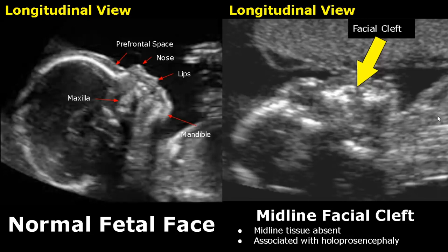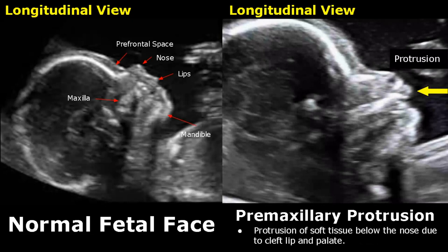3D ultrasound and MRI are much better modalities for such abnormalities. In some cases of cleft lip and palate, there is protrusion of soft tissue below the nose. We can see some protrusion of soft tissue in this longitudinal image — it is called premaxillary protrusion.